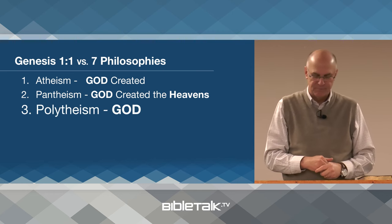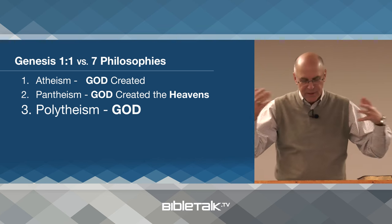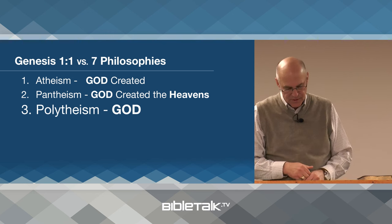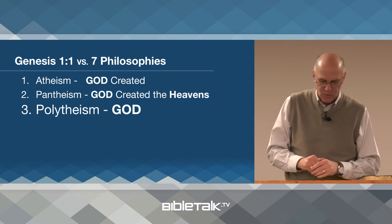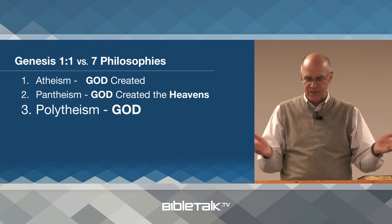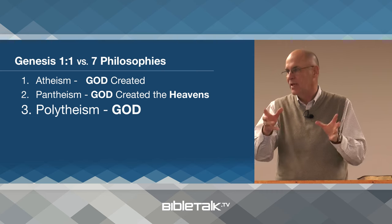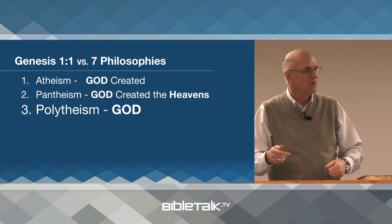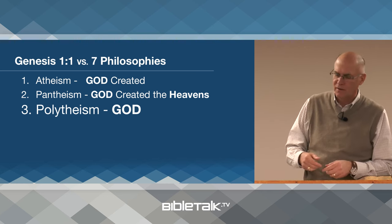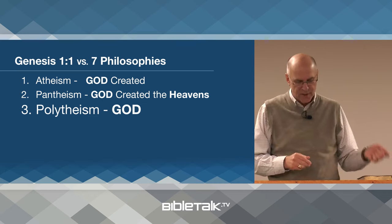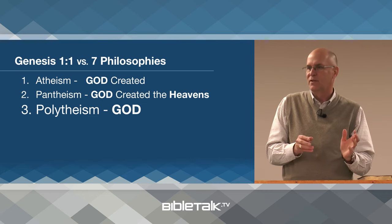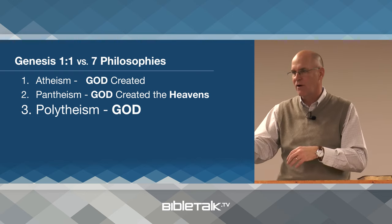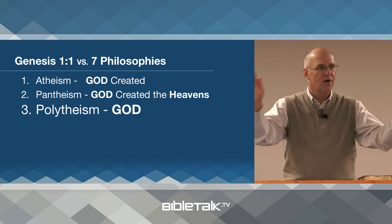How about polytheism? Polytheism teaches a multiplicity of gods. The Greeks, the Romans, many ancient peoples as well as primitive peoples today believed in many gods. But Genesis 1:1 says that only one God created all things — not the good God and the bad God and the God of trees and the God of animals. It says just one God created all these things.